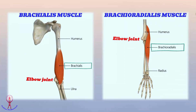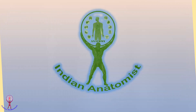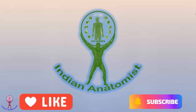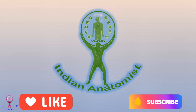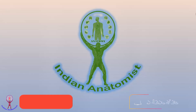Dear students, I hope you all understood about the spurt and shunt muscles. In our body, these muscles are present in all areas. Both these muscles are very essential for fast acting and at the same time to withstand longer periods and overcome fatigue. I hope you enjoyed today's discussion. In the next video, I'll be covering yet another interesting topic from gross anatomy that also has clinical implications. Please like, comment, share, and subscribe.